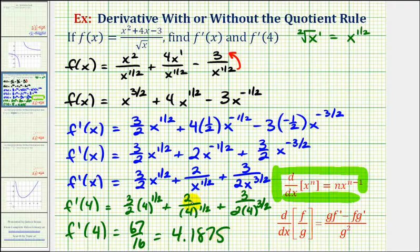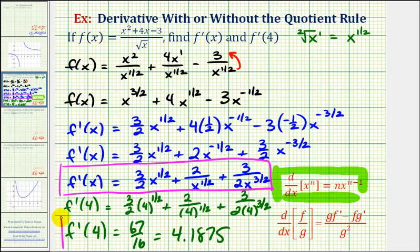Remember this would be the slope of the tangent line at x equals four. So again here's our derivative function, and here's f prime of four. Now remember if you want to, you can see the same problem using the quotient rule if you just follow the link on the screen. But before we go, let's go and take a look at the graph of our function and the slope of the tangent line at x equals four.